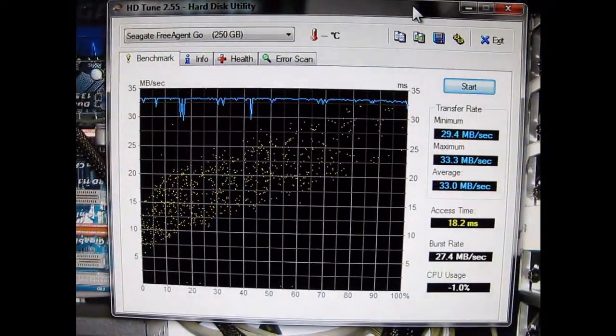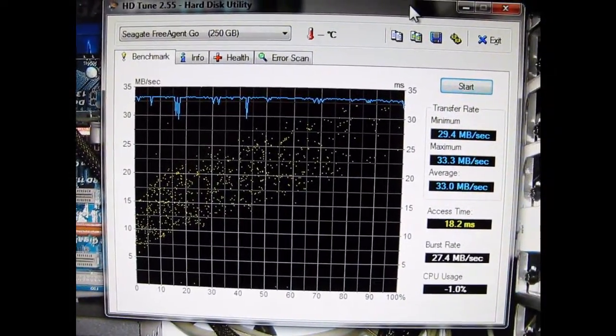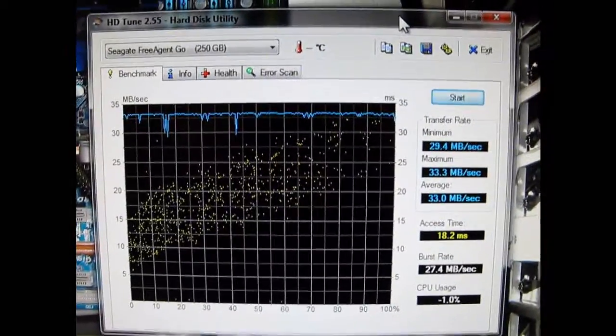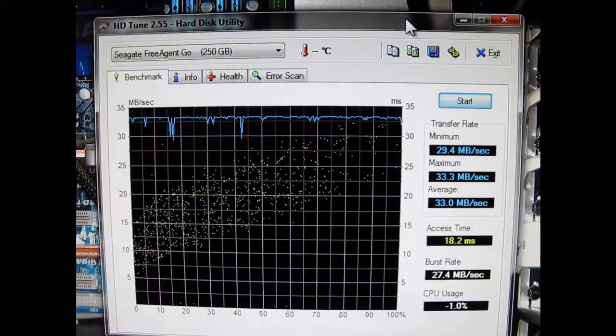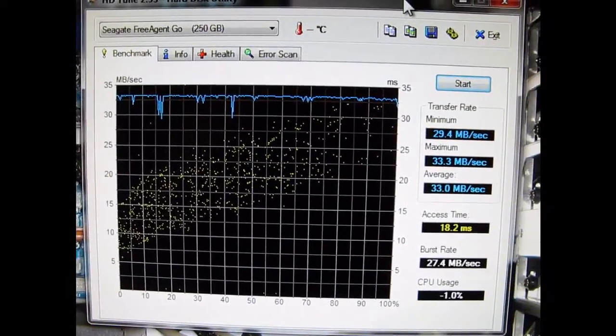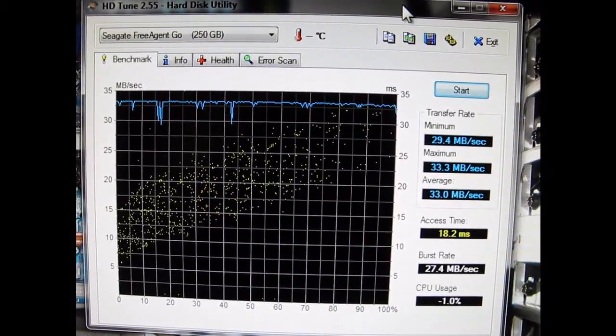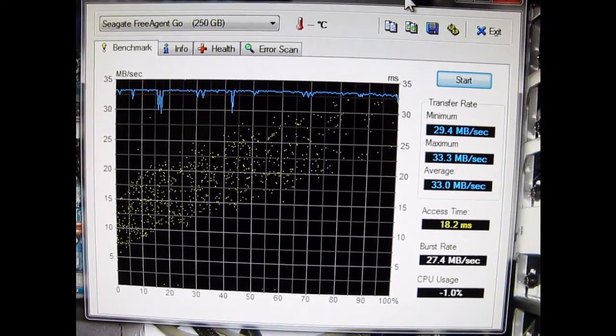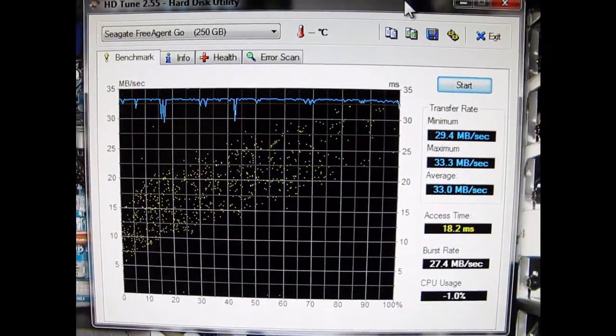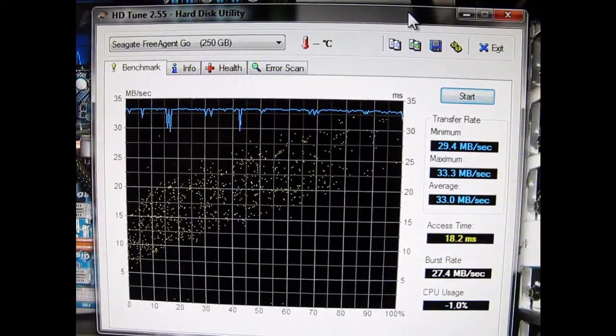Well, fairly interesting result here on the Seagate FreeAgent Go 250GB hard drive I used for backup, it's a 5400RPM drive, and as you can see, an average of 33MB per second, access time 18.2ms, and the rest of it there you can see. Let's move on to the next one.